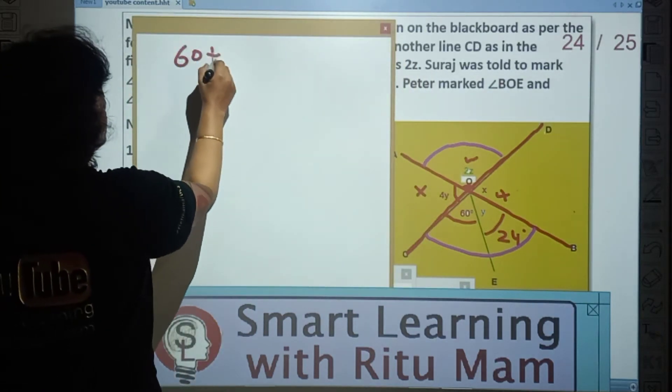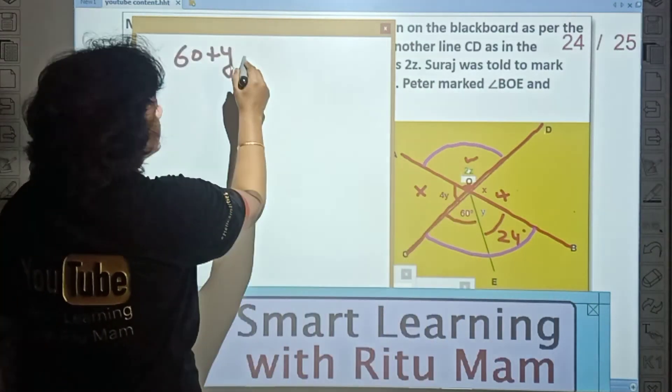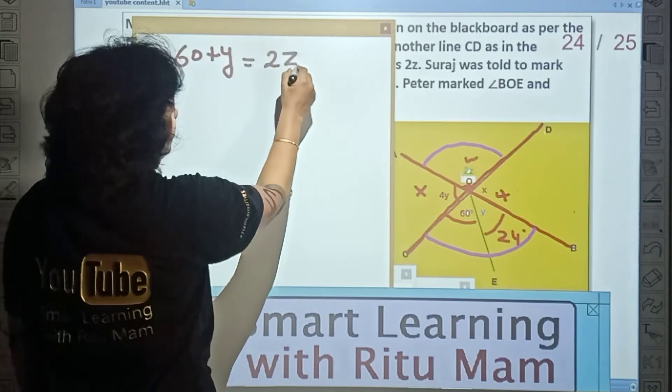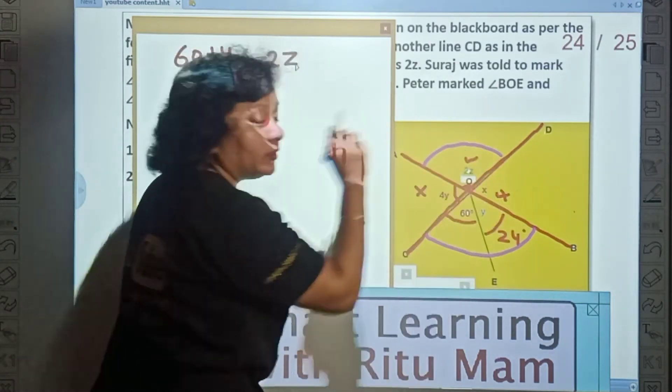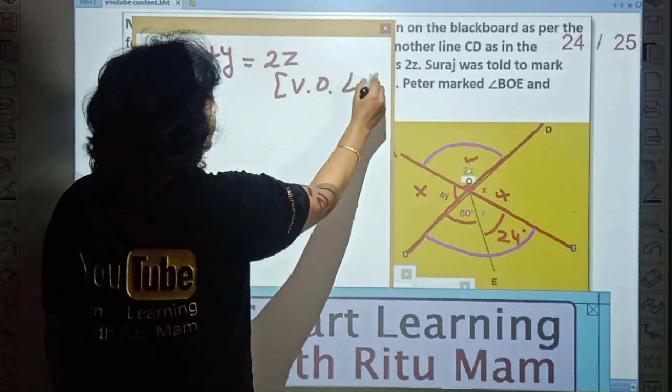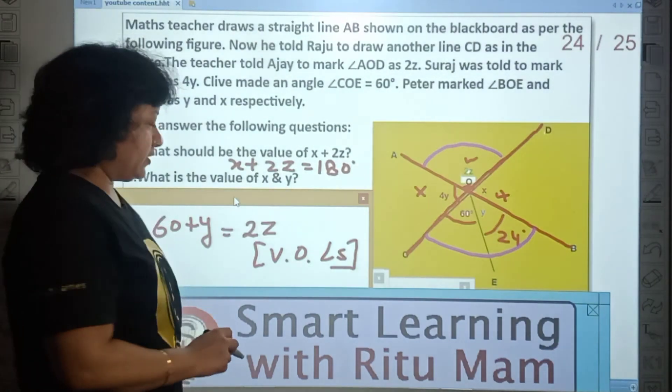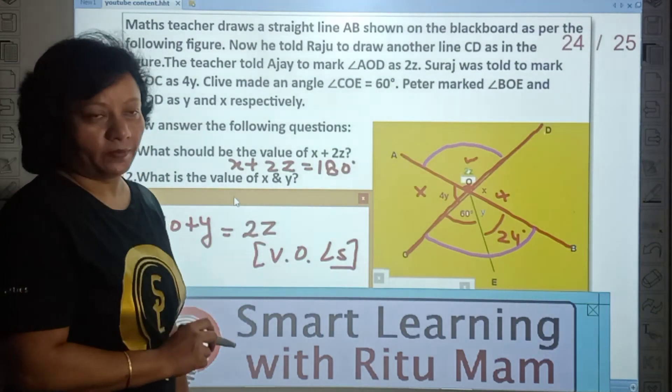So it means 60 plus Y, which angle? B, O, C. It is equal to 2Z, A, O, D, by vertically opposite angles. So finally this is the relation between Y and Z.